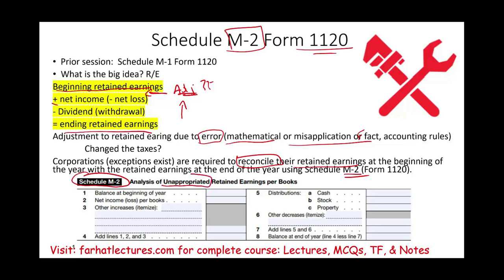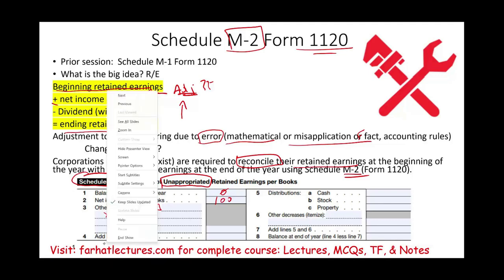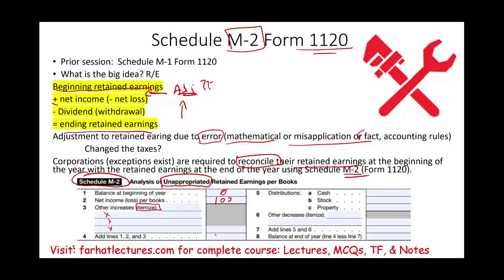Analysis of unappropriated retained earnings. Unappropriated means not restricted. That's all what it is. And look, it looks exactly like a statement of retained earnings. You have your beginning balance. Let's use the same numbers that we used earlier. Beginning balance, it's a new company, zero. Net income is $100. Notice here other increases, itemize them. If there's any increases, you itemize them.